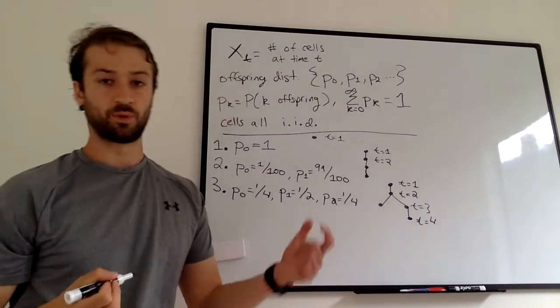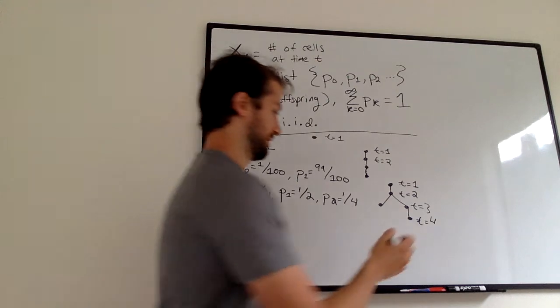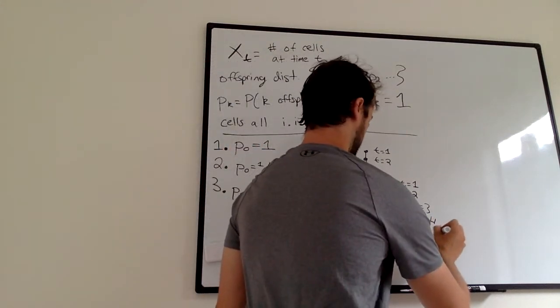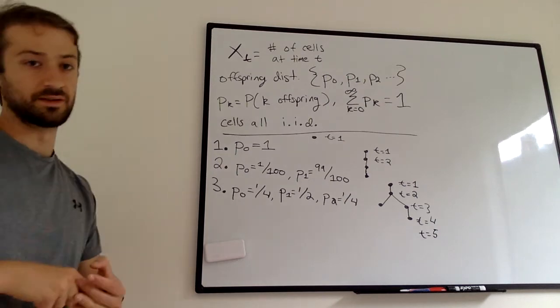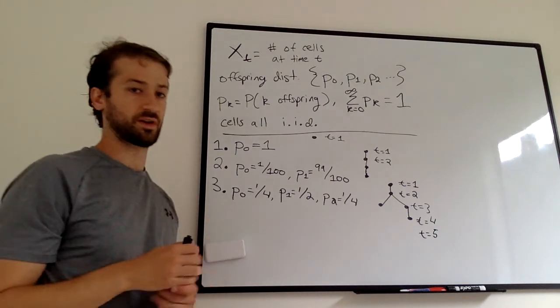So X sub 4 is 1, and then let's say this cell dies out. It doesn't have offspring. T equals 5. And then we're done. There's nothing else, because there's no more cells.